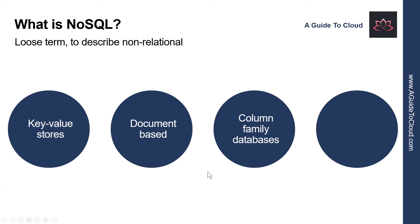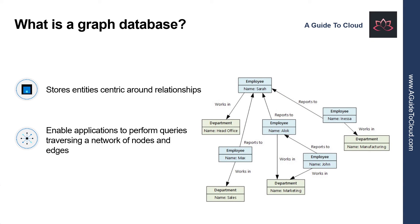And the last one is graph databases. Graph databases enable you to store entities, but the main focus is on relationships that these entities have with each other. A graph database stores two types of information: nodes that you can think of as instances of entities and edges which specify the relationship between nodes. Nodes and edges can both have properties that provide information about that node or edge. Additionally, edges can have a direction indicating the nature of the relationship. The purpose of the graph database is to enable an application to effectively perform queries that traverse the network of nodes and edges and to analyze the relationship between entities.